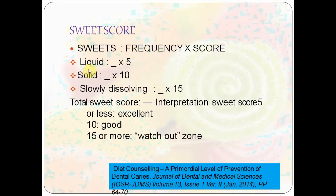Liquid, solid, and slowly dissolving forms are given scores of 5, 10, and 15 respectively, which are multiplied by the frequency of sugar consumption per day. The resulting sweet score is interpreted as: less than 5 is excellent, 10 is good, and 15 or more means the patient should be placed on a watchout or high-risk category.